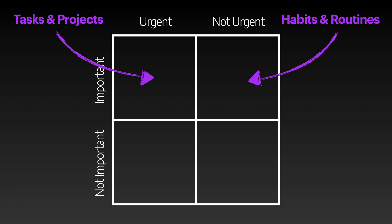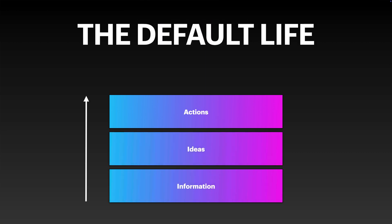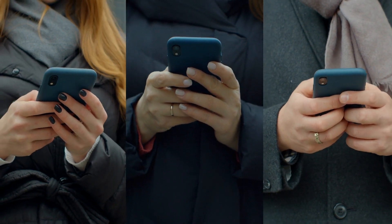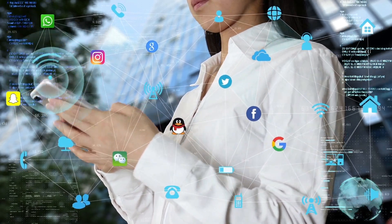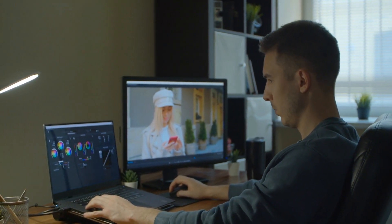Everything that happens at the actions level is initiated by either an idea you were presented with or information that you consumed, either intentionally or unintentionally. Being unintentional about the information you consume causes you to live what I call a default life — one driven by outside forces. This causes you to consume more information because you're looking for the one thing that can make everything change for the better, which leads to FOMO and a general sense of overwhelm. When you over-consume, you also don't have time to think about or develop any of the information you've consumed, so you jump from one thing to the next searching for that next hit of dopamine.